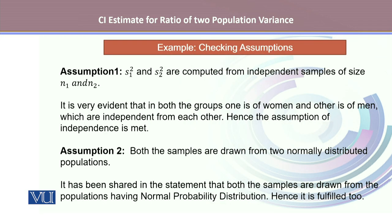Let's first check the assumptions. Assumption 1 speaks about both sample variances being computed from independent samples of sizes N1 and N2. It's very evident that in both groups, one is of women and the other group is of men, which are independent from each other. Hence, the assumption of independence is met.